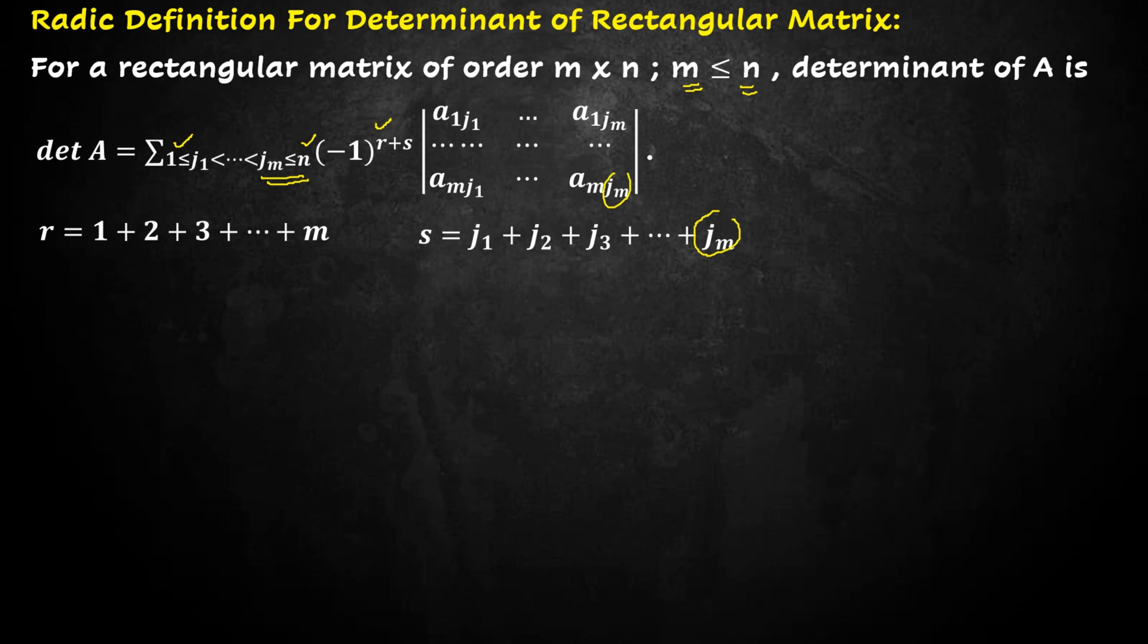Now we apply this definition to a 2 x 3 matrix: a1j1, a1j2, a1j3, a2j1, a2j2, and a2j3. It has 2 rows and 3 columns.